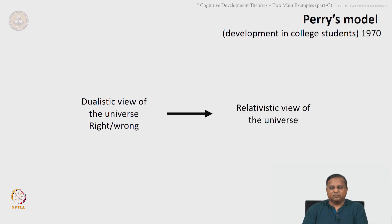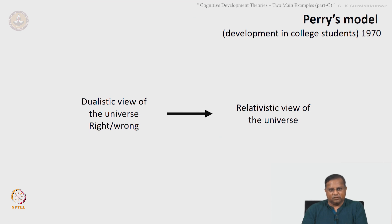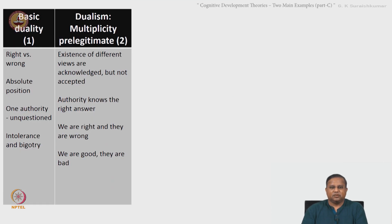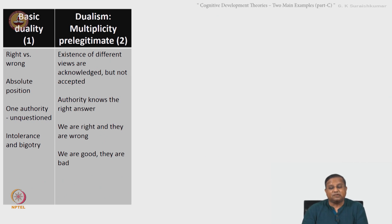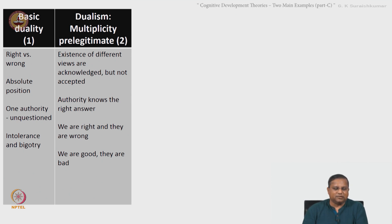From there, the person develops to a relativistic view of the universe. In the dualistic view, looking at the various stages, it is right versus wrong — the positions are absolute. One unquestioned authority is what the person looks for. Intolerance and bigotry set in — these are the essential aspects of the duality stage.